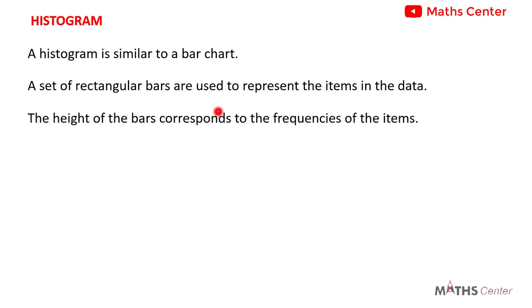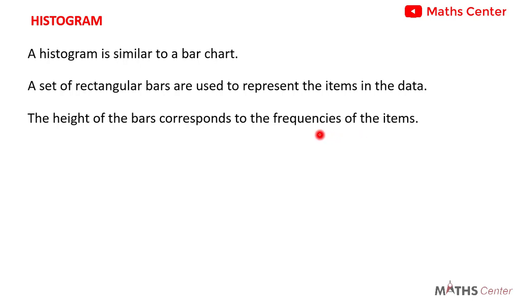The height of the bars corresponds to the frequencies of the items. We saw this when we were learning about a bar chart — on a bar chart, the height of the bar corresponds to the frequency of that particular item. On a histogram too, the height of the bars corresponds to the frequencies of the items. These are some of the similarities between a histogram and a bar chart.